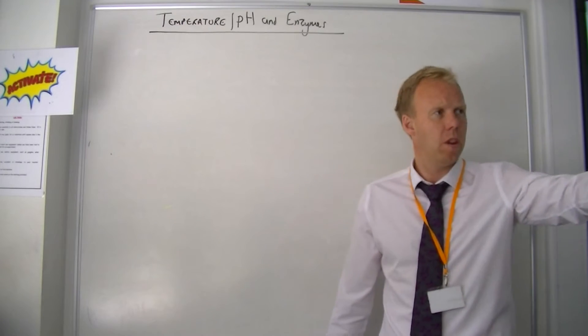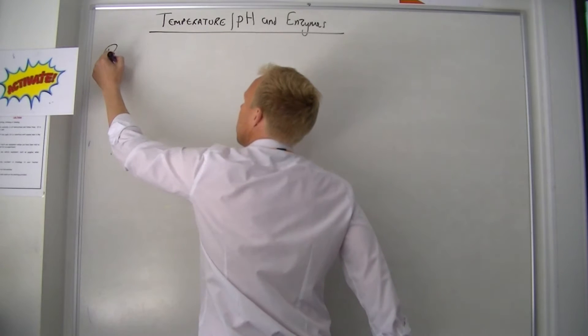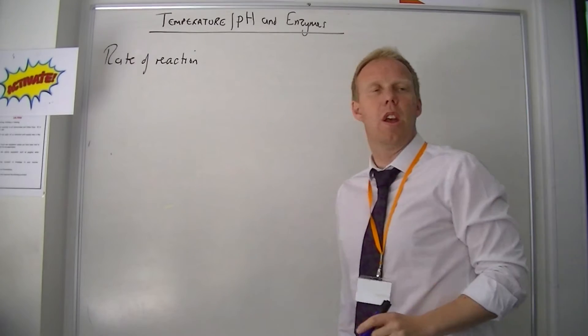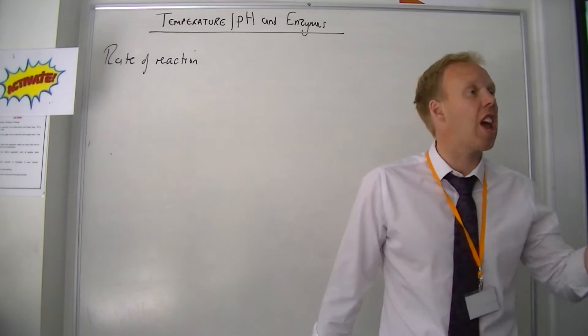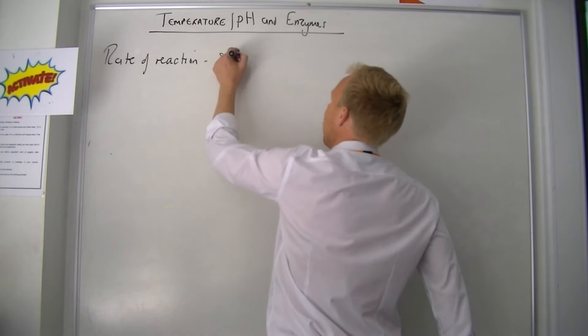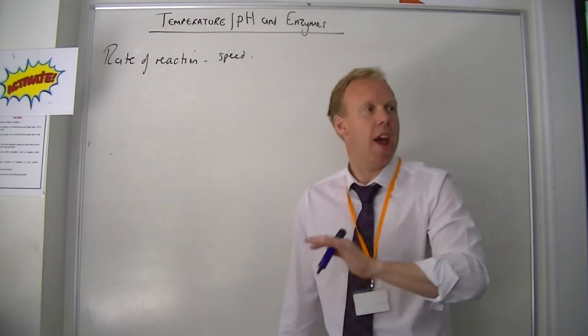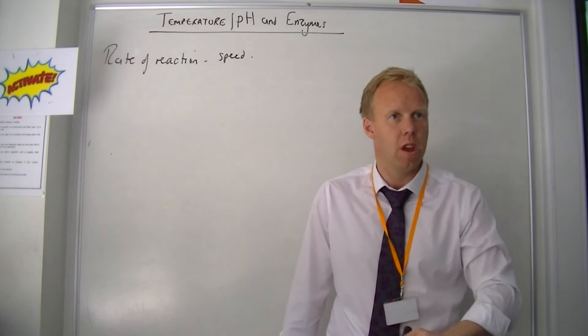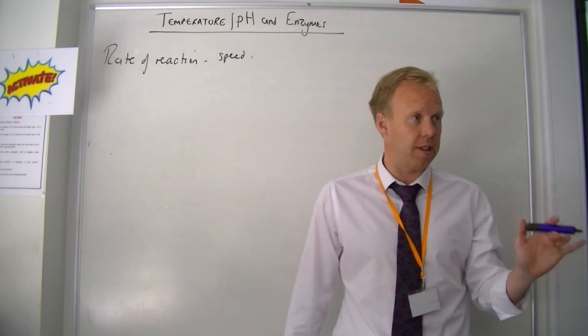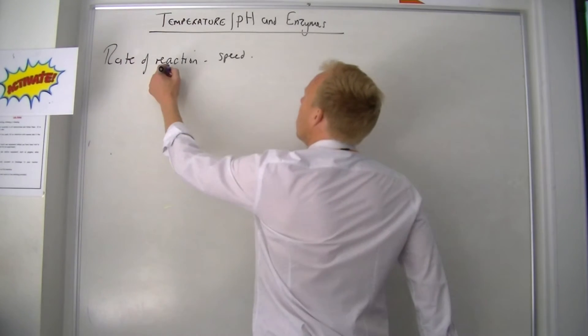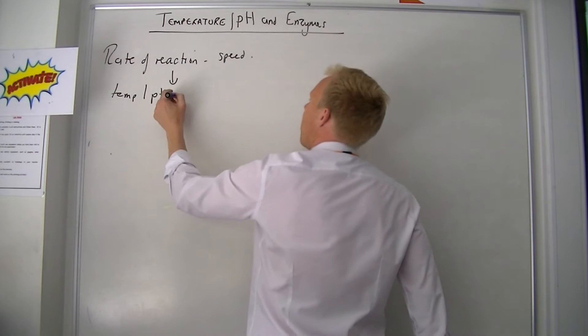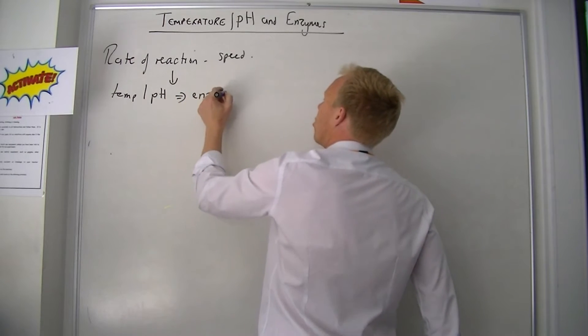The concept is rates of reaction, and I need you to know that rate of reaction is just how fast a reaction happens - the speed. Now temperature and pH affect that when the reaction is controlled by an enzyme. So that's important: temperature and pH affect the rate if an enzyme controls the reaction.